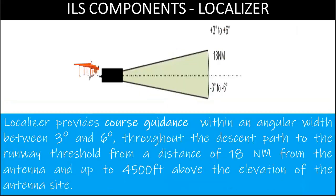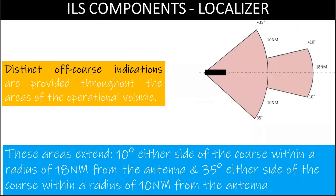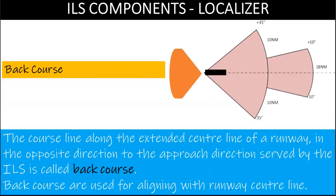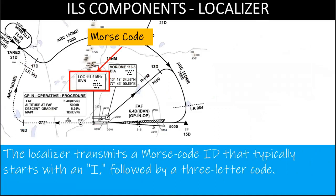Localizer provides course guidance within an angular width between 3 degrees and 6 degrees throughout the descent path to the runway threshold, from a distance of 18 nautical miles from the antenna and up to 4,500 feet above the elevation of the antenna site. Distinct off-course indications are provided throughout the areas of the operational volume. These areas extend 10 degrees either side of the course within a radius of 18 nautical miles, and 35 degrees either side within a radius of 10 nautical miles. The course line along the extended center line of a runway in the opposite direction to the approach is called back course. Back course is used for aligning with runway center line. The localizer transmits a Morse code ID that typically starts with an I followed by a three-letter code. Identifying the station is done by listening to the Morse code over the navigation radio.